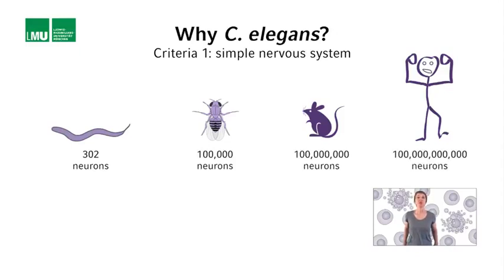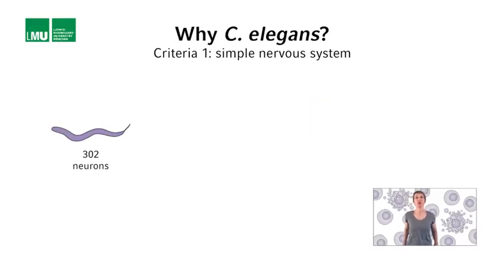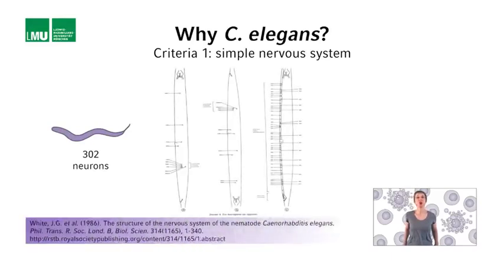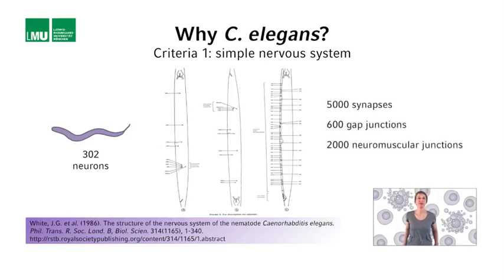Using reconstruction from serial section electron micrographs, John White, Sidney Brenner and colleagues determined the structure of the C. elegans nervous system and its pattern of connectivity, or connectome, in 1986. They found that the 302 neurons are connected to each other through 5,000 synapses, 600 gap junctions, and 2,000 neuromuscular junctions.